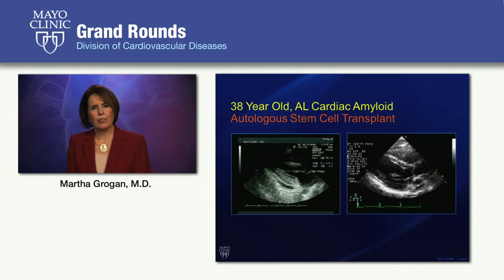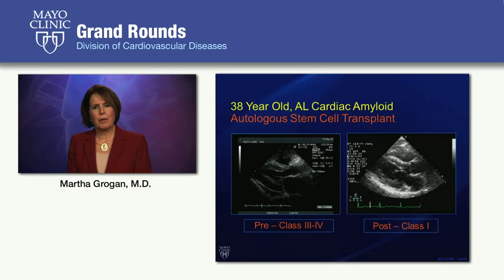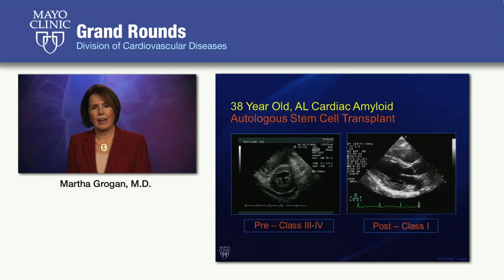Why should we diagnose cardiac amyloidosis? Here's a patient who had autologous stem cell transplant for AL cardiac amyloid. When she presented, she had class three to four heart failure with classic echo features — thickened walls and severe diastolic dysfunction. Three years after her stem cell transplant, her echo was essentially normal: normal wall thickness, normal diastolic function. She is actually alive 13 years later. So it is very important to establish the diagnosis.